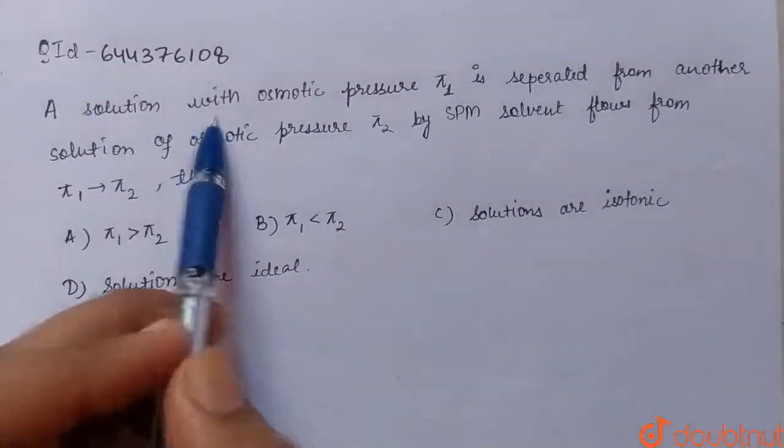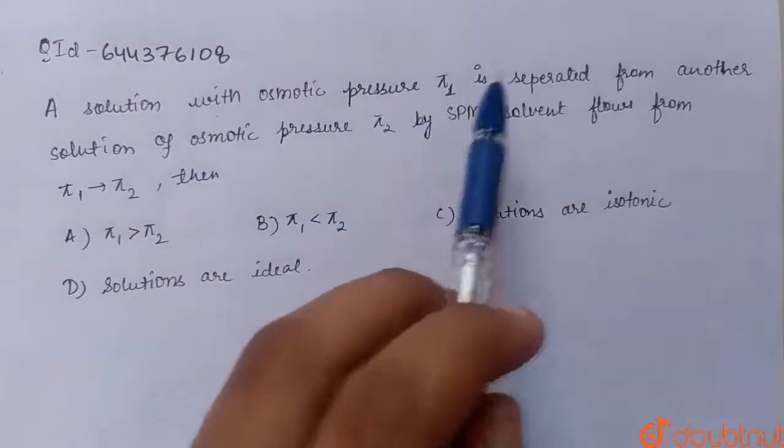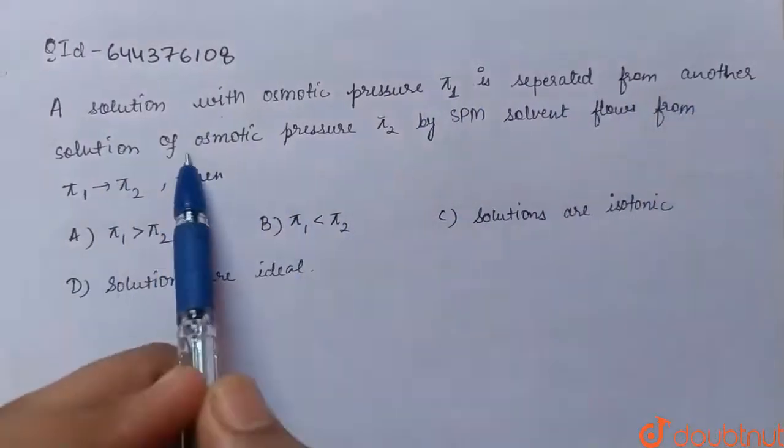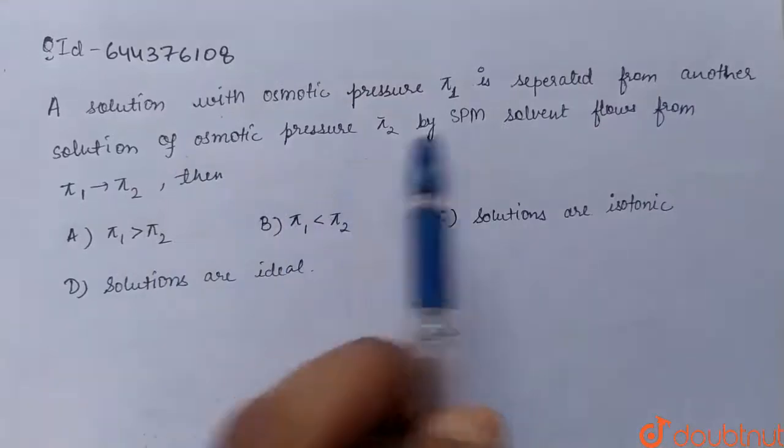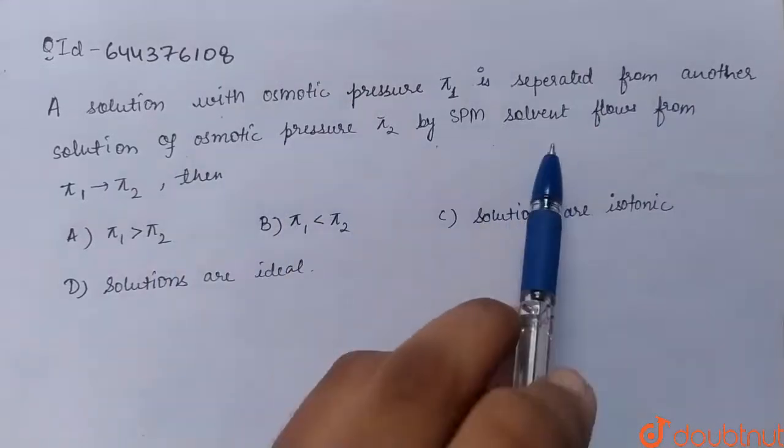A solution with osmotic pressure π1 is separated from another solution of osmotic pressure π2 by SPM. Solvent flows from π1 to π2. Then: